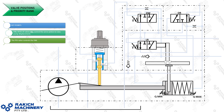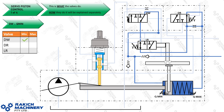Now I'll build on the previous slides and show what the valves are actually doing in their Q-min or Q-max position. Explaining the DW valve: it's now shown shuttled over to the left against the spring. The servo pressure is coming in from the right past this check valve. Note that there is a constant servo pressure supply to the left-hand side of the servo piston — it's always trying to send it to Q-max. That pressure is always there and doesn't rely on any valve positioning to change that.